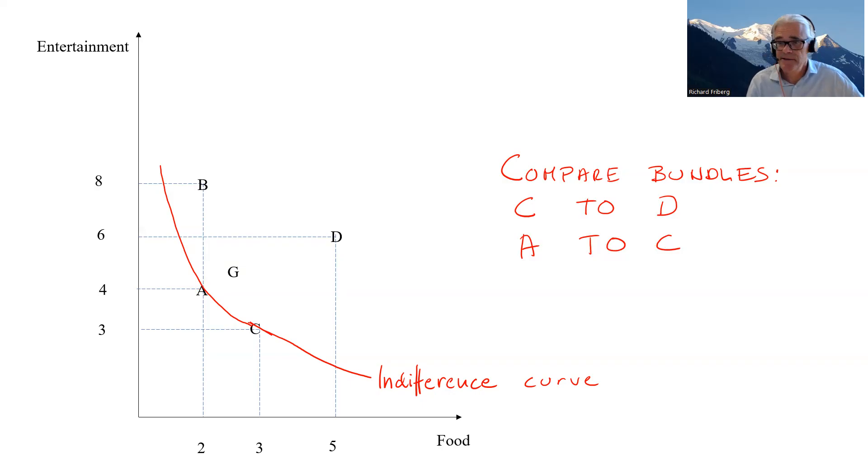Preferences are complete, so there's going to be very many of these kind of indifference curves here. So let's put one here, for instance. So there's another, call this indifference curve one and this indifference curve number two. And there will be additional ones further up here. So the whole area here will be covered by indifference curves.